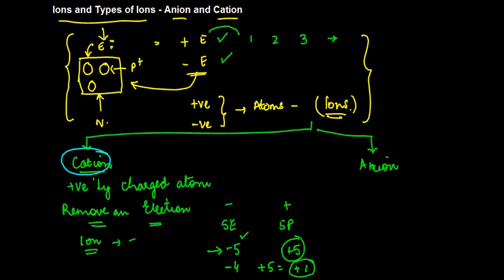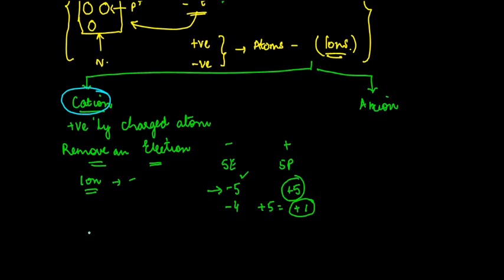Let me give you an example for this. So let's say, if you have sodium, sodium atom has basically 11 protons and 11 electrons.